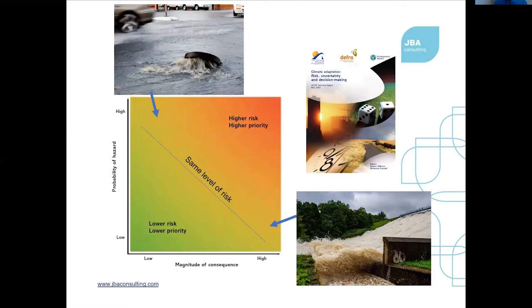This method of thinking about risk management was well described in a report now nearly 20 years old, produced by Richard O'Connell and Robert Willows. This put forward a number of very useful concepts about how to manage climate risks, introducing concepts such as over-adaptation, under-adaptation and maladaptation — ways in which we can consider how to address managing these risks and avoiding spending too much money, not spending enough money, or doing things in ways that could be done better. It was a very useful, groundbreaking piece of work.